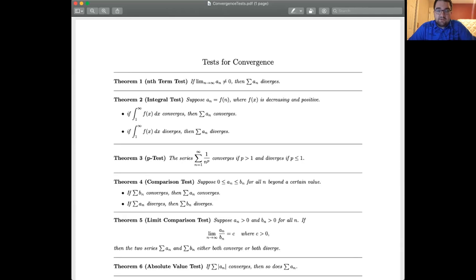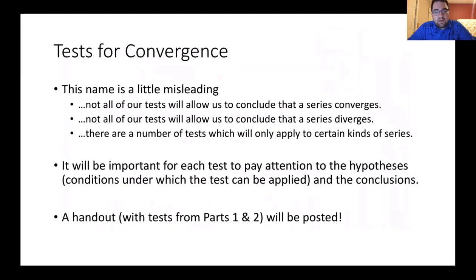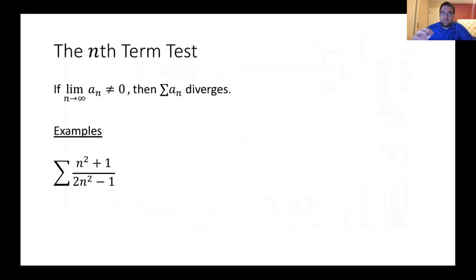So now let me switch back to my iPad. Take a look at that handout — it might be the kind of thing you want to have with you as we start talking about these tests. The first test we're going to discuss is called the nth term test. The nth term test is a really quick base-level check to determine whether something diverges.